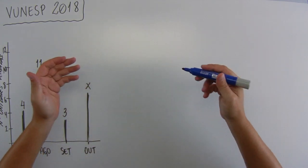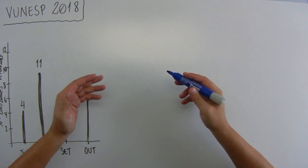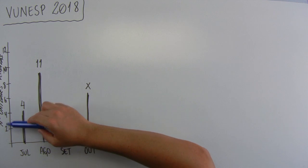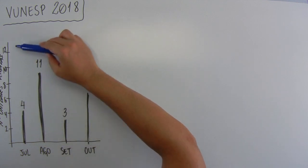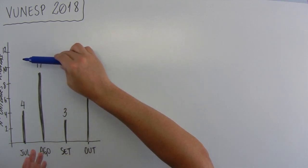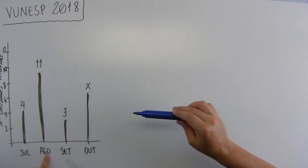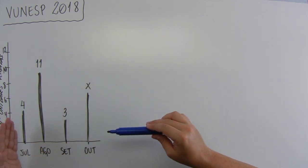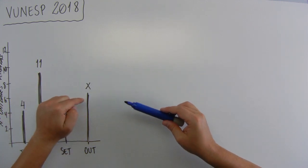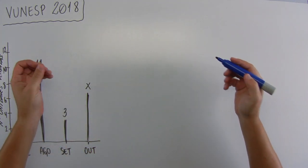Às vezes algumas figuras dão certo medo na gente, mas não precisa ter medo. Vamos olhar a figura antes de ver o enunciado. Aqui está um pouquinho espremido, mas são as unidades vendidas. São o número de unidades vendidas, e aqui são os meses do ano. Então, 4 unidades em julho, 11 em agosto, 3 em setembro e X em outubro.